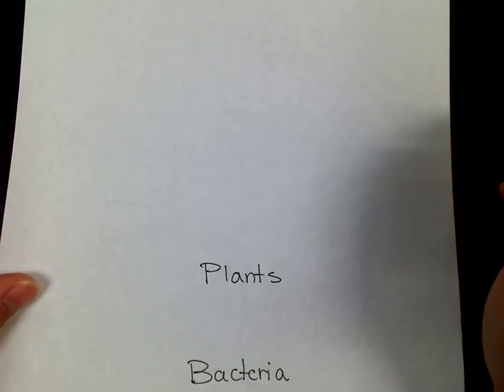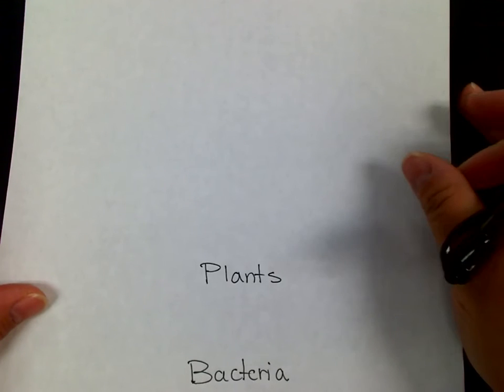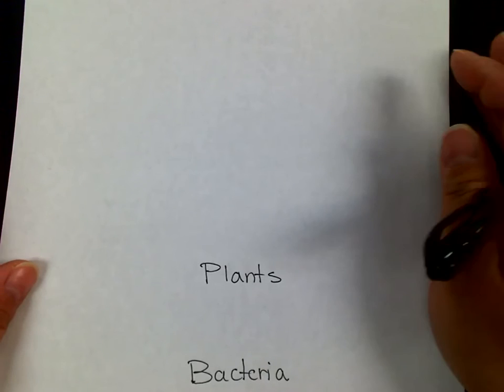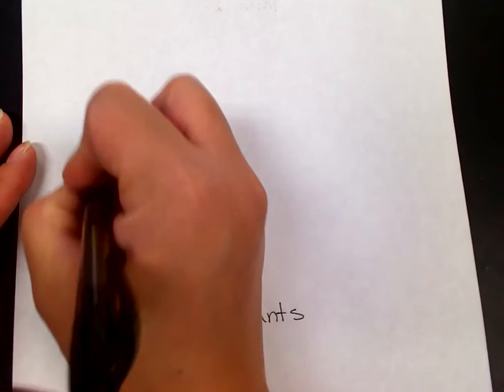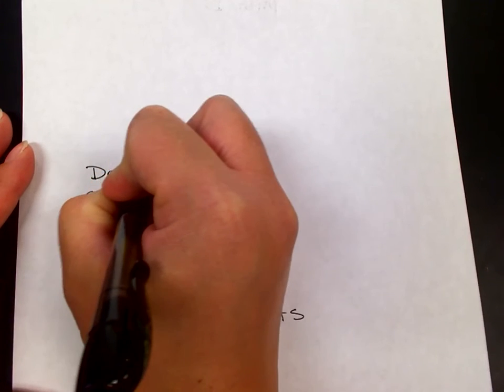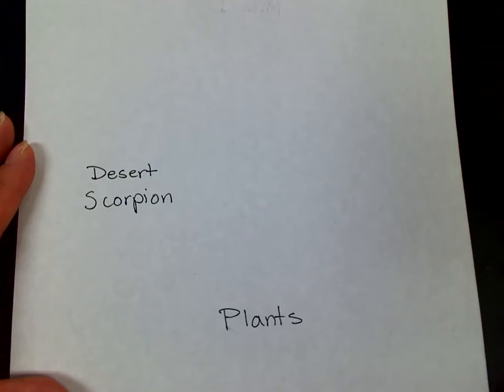Your job is to find six other organisms — specifically six animals — that belong to your particular ecosystem. For example, let's say you had a desert ecosystem. We're going to put one particular animal: a scorpion. But there are many types of scorpions, so you have to include a very specific species. In the desert there is a species called the desert scorpion.